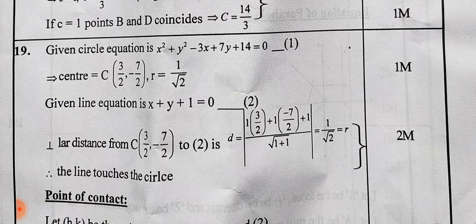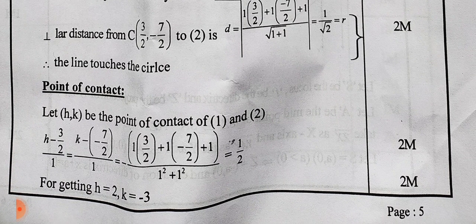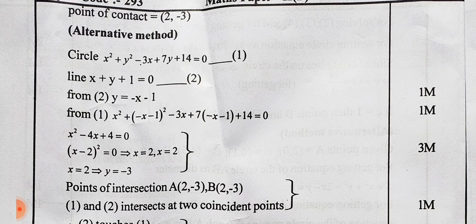19th one: you can get 1 plus 2 marks, 3 marks. You can get the point of contact, so you can get 2 plus 2 marks, so you can get 7 marks. Next page — now you can get the answer for 20th one.